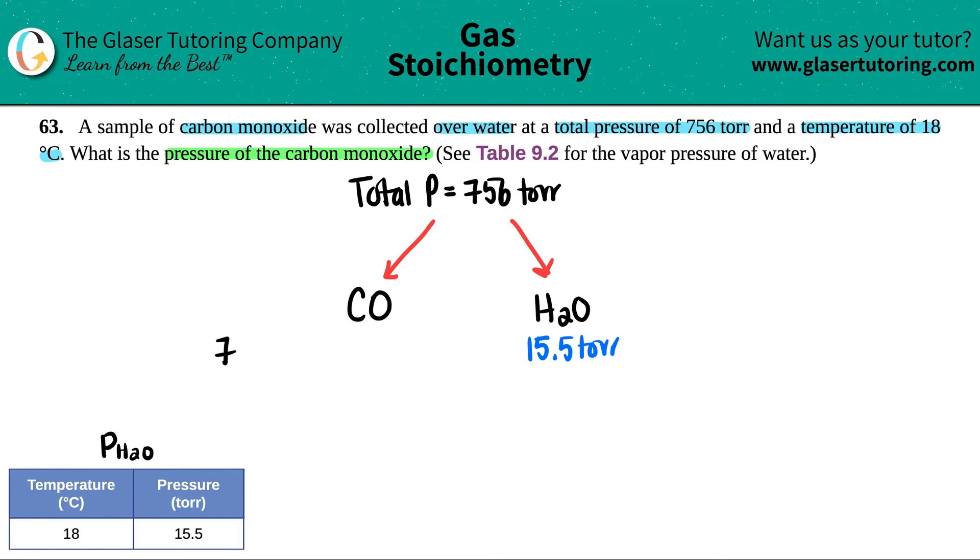756 minus 15.5, and that's it. So 756 minus 15.5 gives me 740.5 torr.